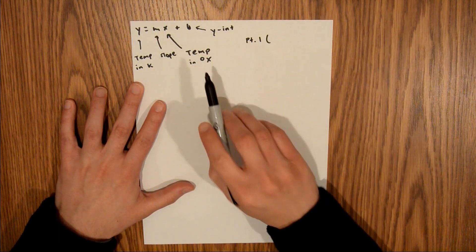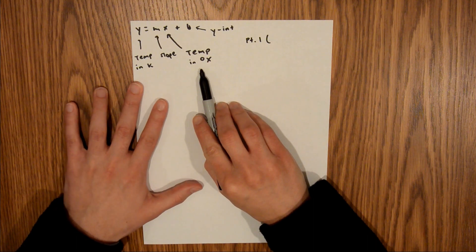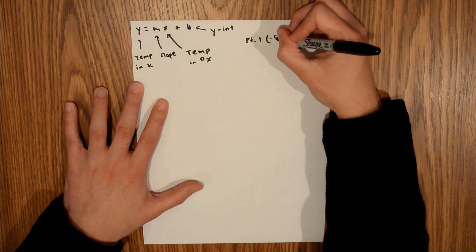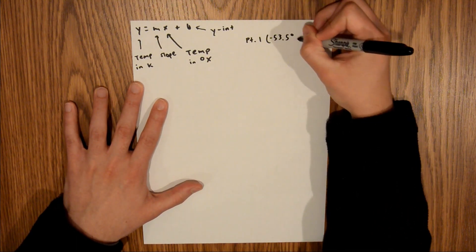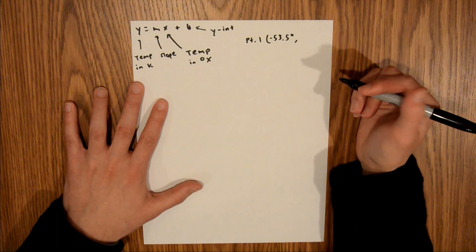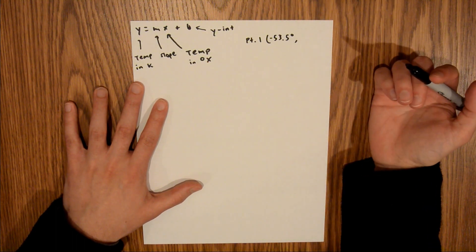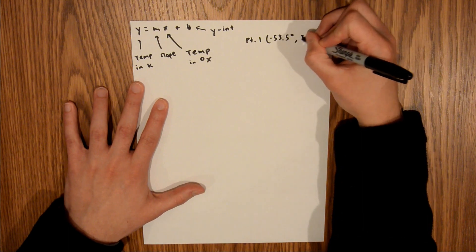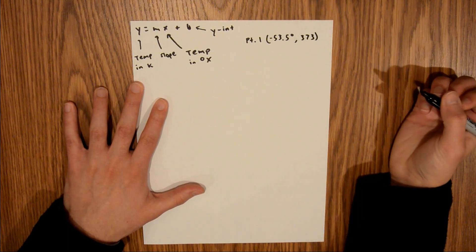and we're told that in terms of degrees x, that is negative 53.5 degrees. And then we are told at the end of the problem to approximate water's boiling point as 373K. So there's our first data point,